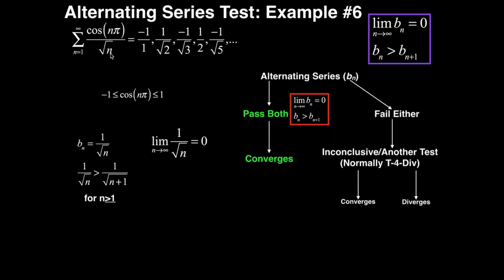If we just think about the denominator and get some partial terms, the denominator is just going to be square root of 1, square root of 2, square root of 3, square root of 4 which is 2, square root of 5, and so on. So if it's alternating, the numerator is what has to be the alternating part.